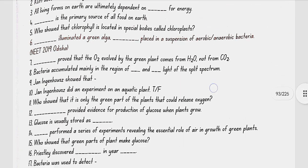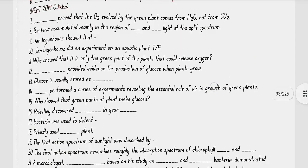Cornelius Van Neel proved that O2 evolved by the green plant comes from H2O and not from CO2. Bacteria accumulated mainly in the region of red and blue light of the split spectrum.